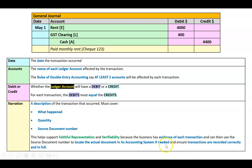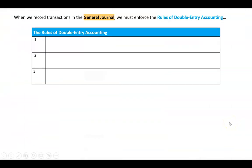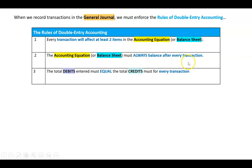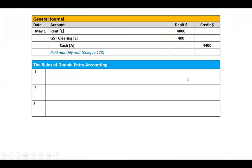By recording in the general journal, we enforce the three rules of double entry accounting: first, every transaction will affect at least two items in the accounting equation; second, the accounting equation or balance sheet must always balance after every transaction; and third, the total debits entered must equal the total credits for every transaction. Let's look at our example to verify all three.